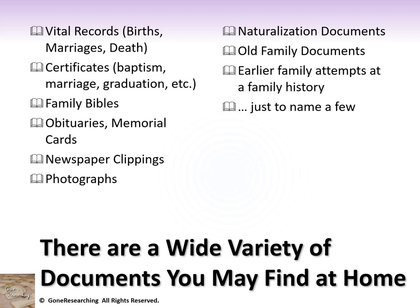There are a wide variety of documents you may find at home. Vital records such as births, marriages, and deaths make excellent records for genealogy. Certificates such as baptism, marriage, and graduation are great too. A family Bible passed down generation to generation may hold some clues. Obituaries, memorial cards, and newspaper clippings are often found at home. Photographs — and the information on the back or front — may help identify relatives, and the photographer's studio name may hold a clue also. Naturalization documents, older family documents, and earlier family history attempts may yield clues too.